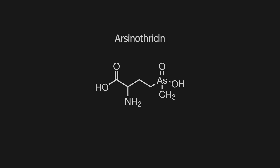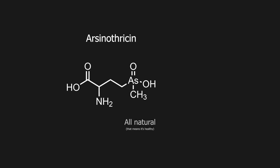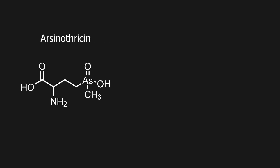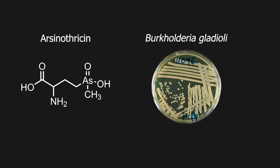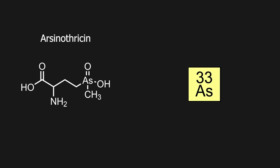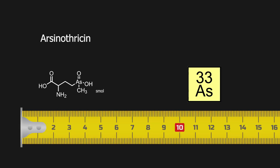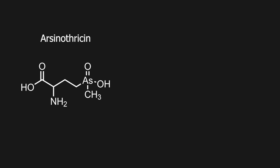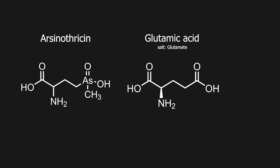Arsenothricin is a naturally occurring antibiotic. It was discovered when it was found to be produced by a mutant of the rice rhizosphere bacterium Burkholderia gladioli, which uses it to kill other bacteria, while it itself is resistant. Uniquely, arsenothricin contains arsenic, and it is a small molecule that has a non-proteinogenic amino acid analog of glutamate.